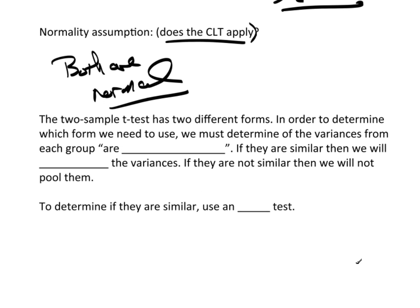Now, here's where things get a little bit tricky. The two-sample t-test actually has two different forms. In order to determine which form we need to use, we must first determine if the variances from each group are similar. If they are similar, then we will do what they call pool the variances. If they're not similar, then we're not going to pool. Now, think of the term pool for a second. If you're going to pool your effort with somebody, that means you're just going to combine them. You're going to work together. And that's what's going on here.